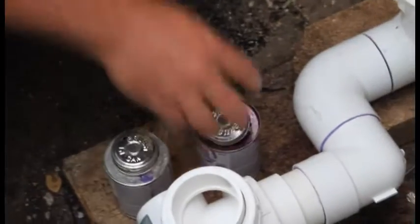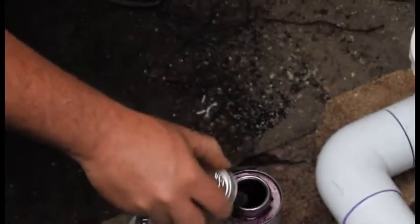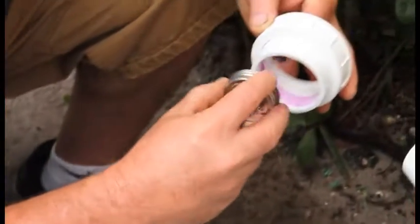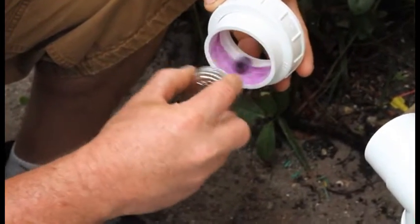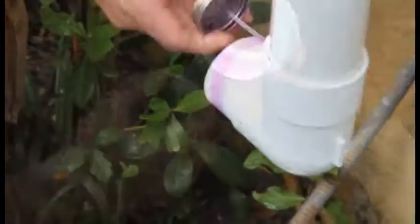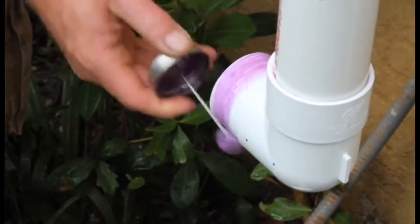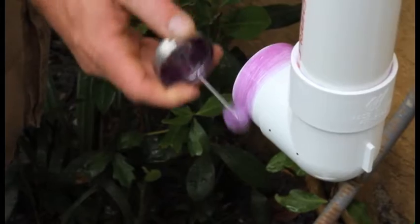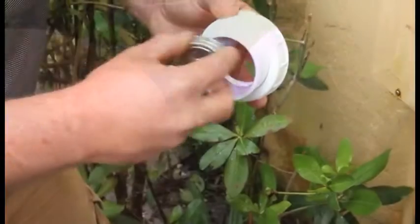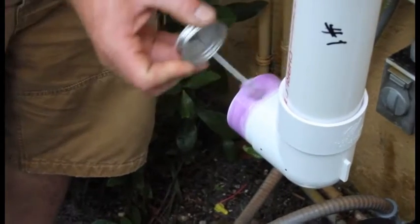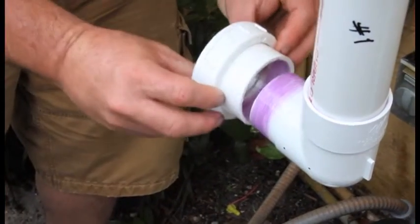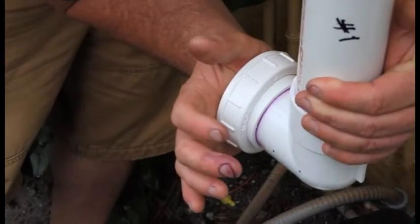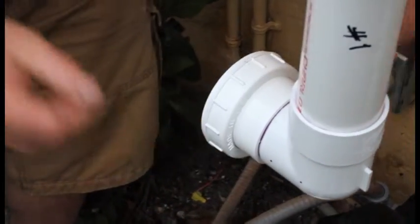Glue the union tails to the street elbows. First, use PVC primer on the union tails and on the 90 degree street elbows, then glue them together carefully. Wipe off any excess glue with a towel or your finger.